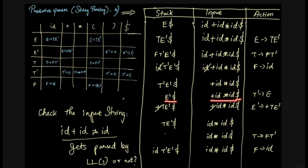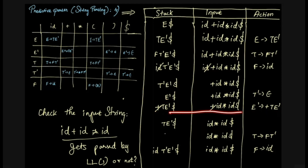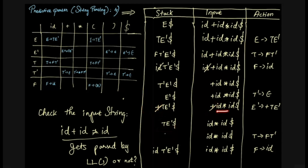So T-dash is on the stack, and plus is the next input. T-dash with plus means T-dash tends to empty. So the action is T-dash tends to empty. The remaining input is plus id cross id dollar. This is the next row — the stack has E-dash and dollar, and the input is plus id cross id dollar. E-dash tends to plus T E-dash. The remaining value is id cross id dollar.